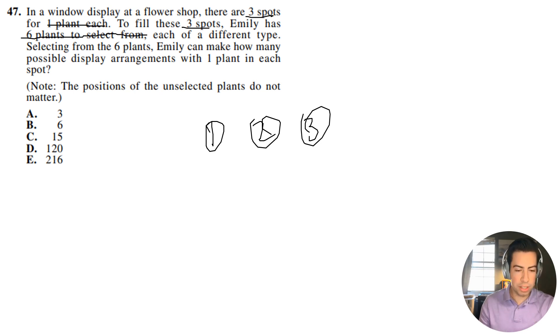And there's six different plants you can choose from. So I'm going to call those plants A, B, C, D, E, and F. So let's say that you were Emily, and let's say you were just trying to figure out how to arrange this.